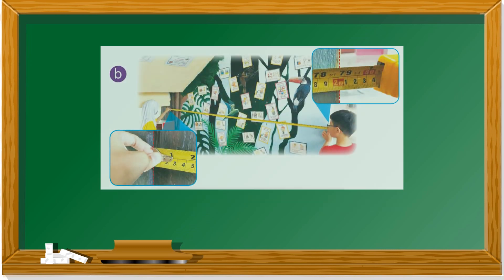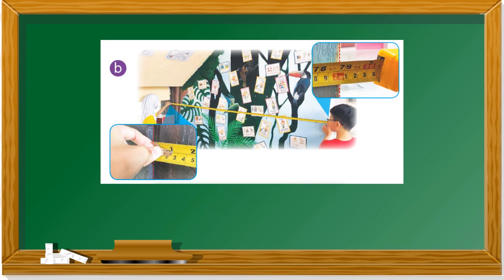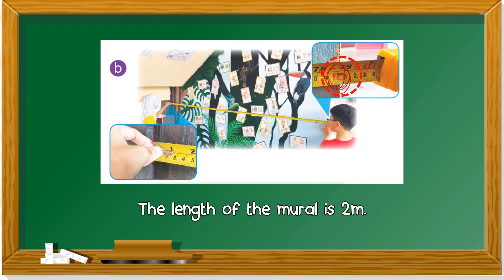This one, they're measuring the mural. Remember, start from zero. So the end of the mural on the wall, you put zero, hold it there. Then you need another friend. So what's the length of the mural? Two meter. Can you see the two meter? It's this one. Two meter.